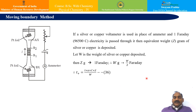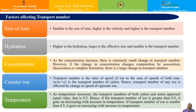Let us now see the factors affecting transport number. The first is the size of ions: the smaller the size of the ion, the higher the velocity, and therefore the higher the transport number. The second is hydration: the higher the hydration, the larger the effective size, and therefore the smaller the transport number.